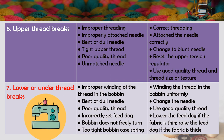Number six is upper thread break. Causes: improper threading, improperly attached needle, bent or dull needle, tight upper thread, poor quality thread, and mismatched needle size. Remedies: correct the threading, attach the needle correctly, change to a new needle, adjust the upper tension regulator, and use good quality thread matching the thread size or texture. Number seven is lower or under thread breaks.